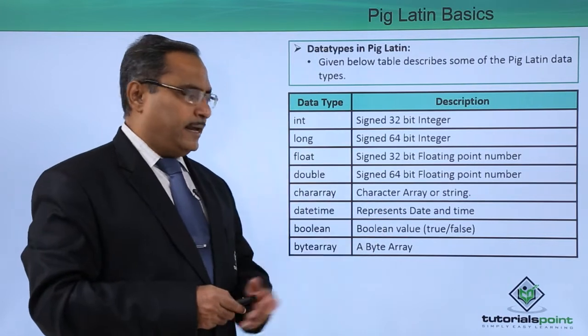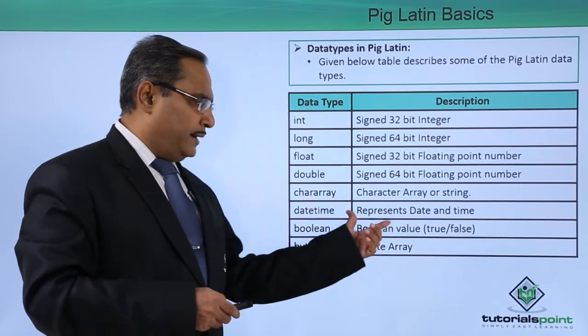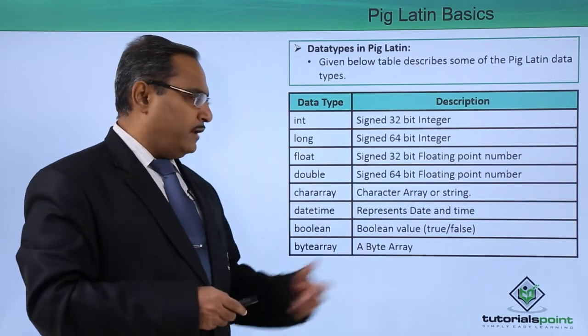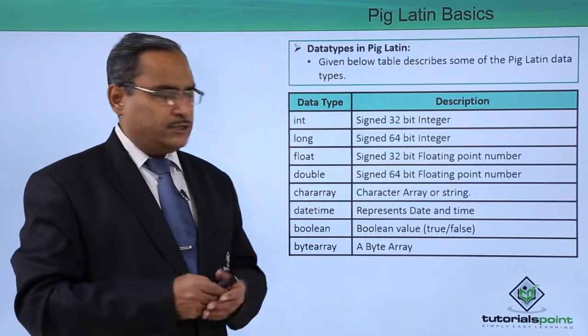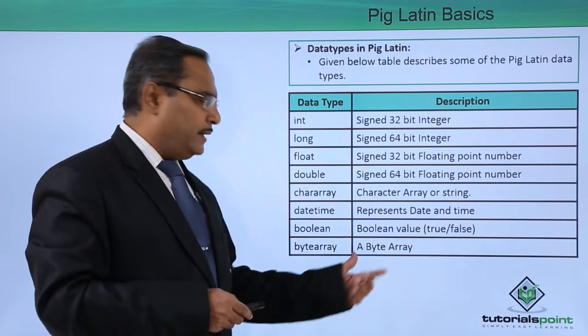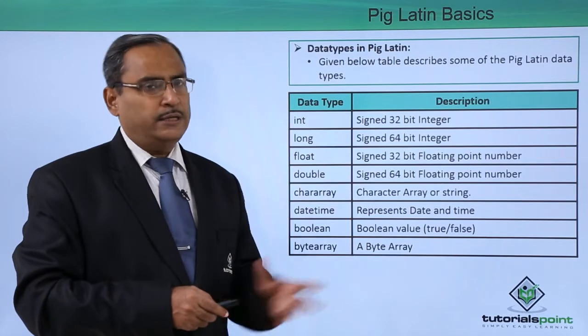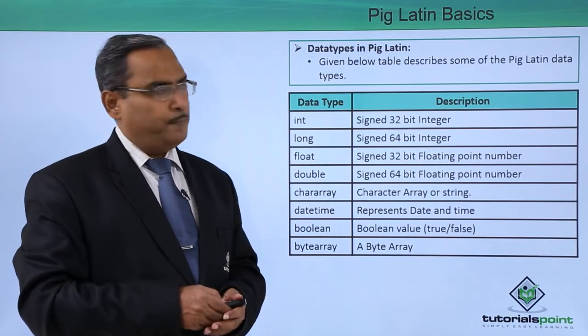Chararray is a character array or string. We have datetime, which represents date and time. We have boolean, whose value is true or false. We have bytearray, which is a byte array. In this way, we have multiple different data types with their respective descriptions.